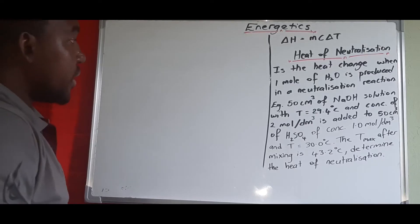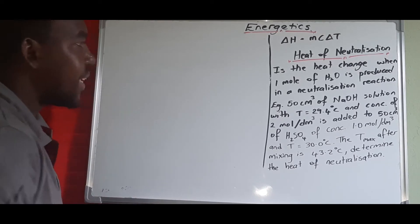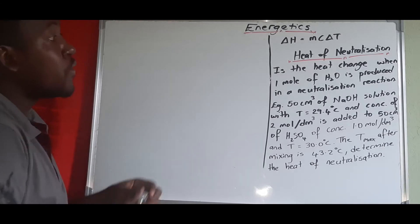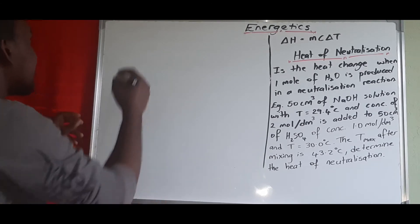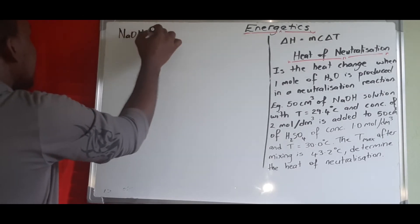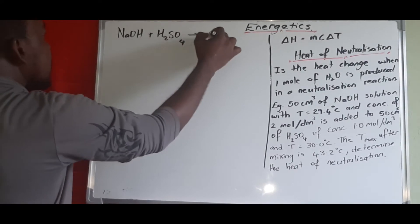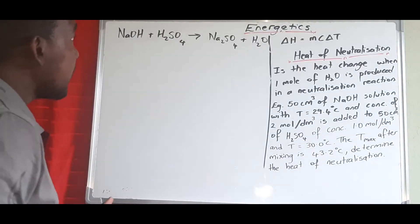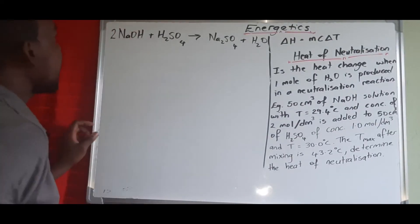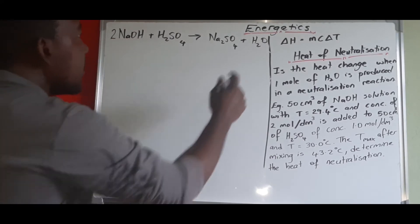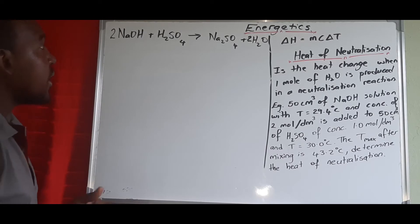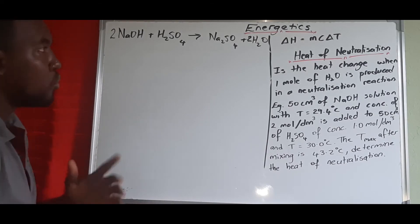The first step is to write the chemical equation. We have NaOH + H₂SO₄ → Na₂SO₄ + H₂O. We ensure the equation is balanced: there are two Na on the right, so we put a coefficient of 2 in front of NaOH on the left. There are four H's on the left, so we put a coefficient of 2 in front of H₂O on the right. That balances the chemical equation.